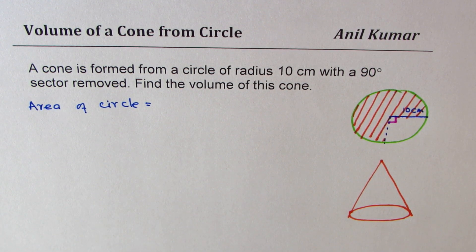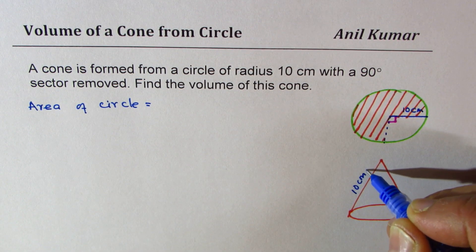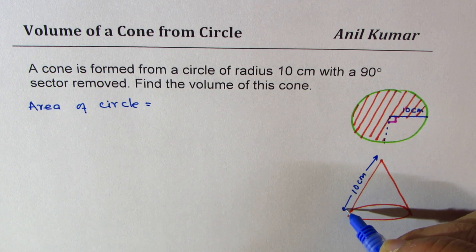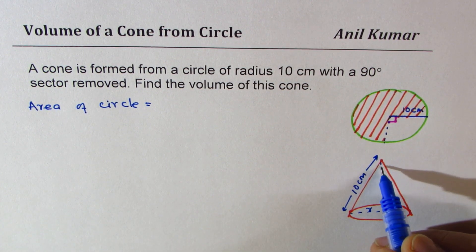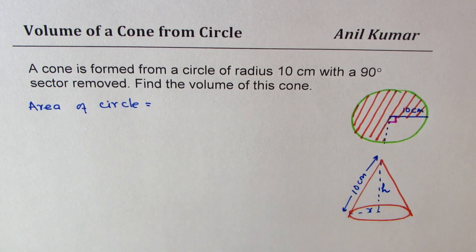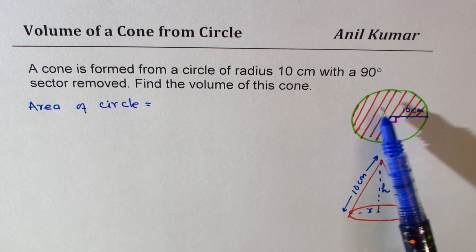This cone is formed with slant height of 10 centimeters. But we don't know the radius or the height of this cone. To find volume we need both of them. Now let us see how to get radius and height of the cone formed when you fold this up.